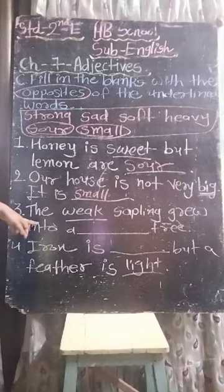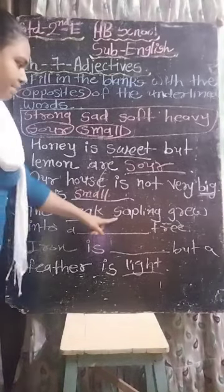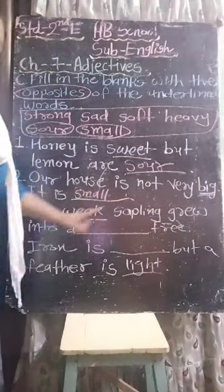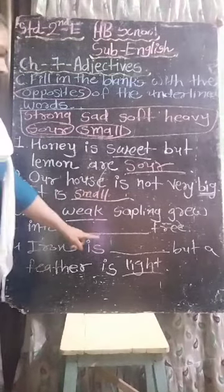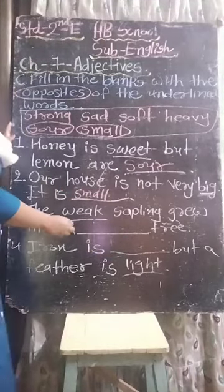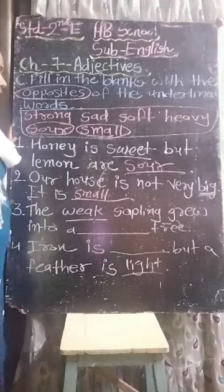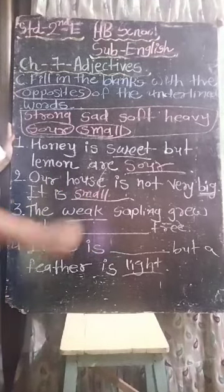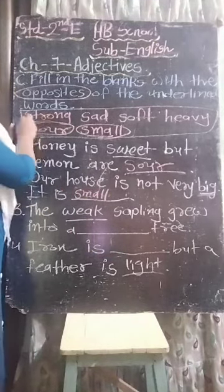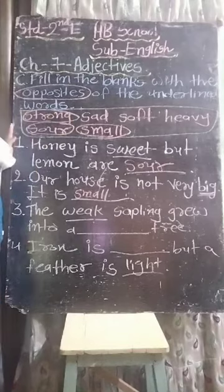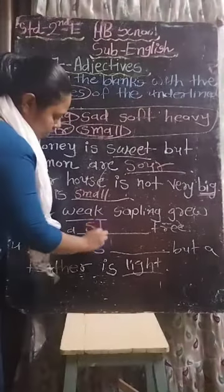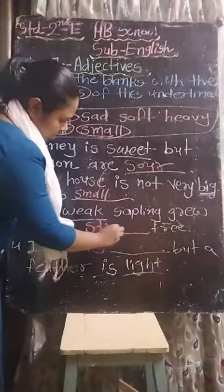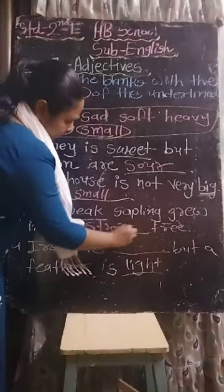Third one: the weak sapling grew into a dash tree. The underlined word is weak. Weak ka opposite क्या है? Strong. The weak sapling grew into a strong tree.